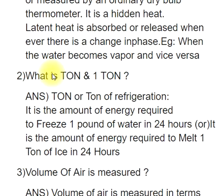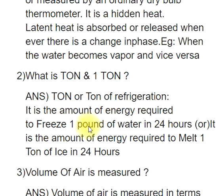Q2: What is ton and 1 ton? ANS: Ton, or ton of refrigeration, is the amount of energy required to freeze 1 pound of water in 24 hours, or the amount of energy required to melt 1 ton of ice in 24 hours.